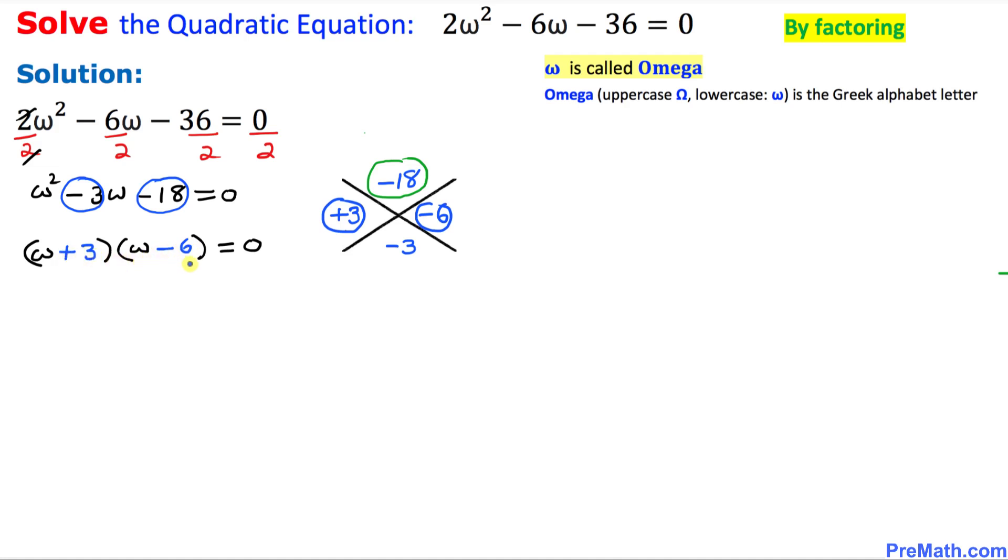These are our factors. In the next step, we're going to split them. ω + 3 = 0 (by the way, this looks like W, but we're going to call it Omega), and at the same time, ω - 6 = 0. That gives us ω = -3 as one of our solutions.